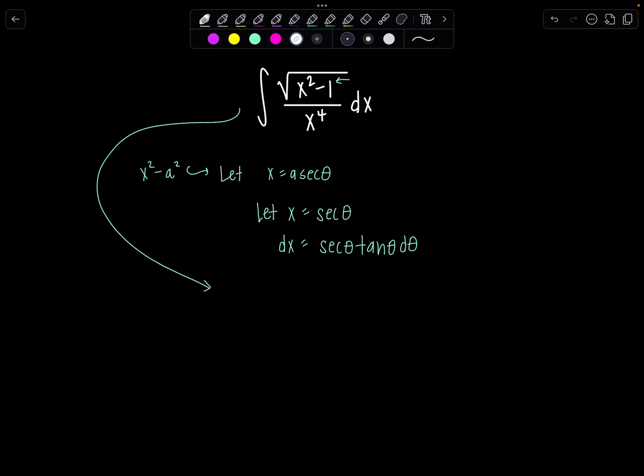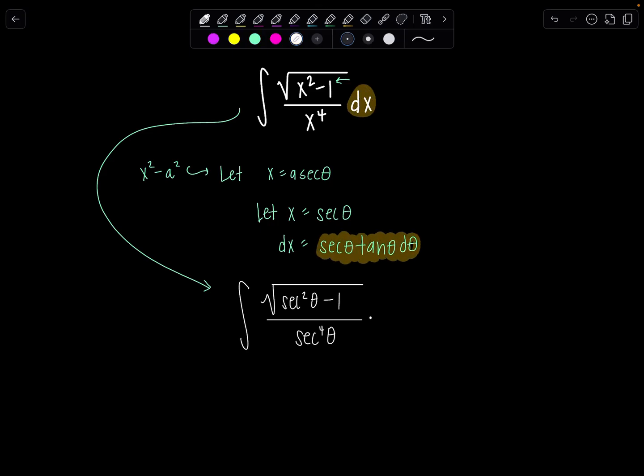So here we go. I have integral square root, upstairs underneath the radical I'm going to have secant squared theta minus one over x to the fourth would be secant theta to the fourth times dx which is secant theta tan theta d theta, all of that secant theta tan theta d theta.